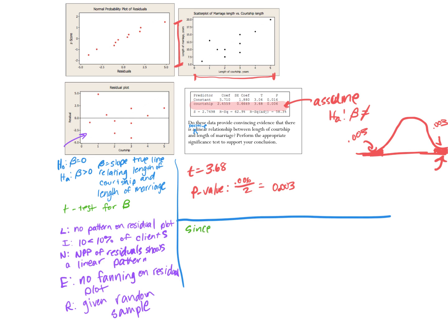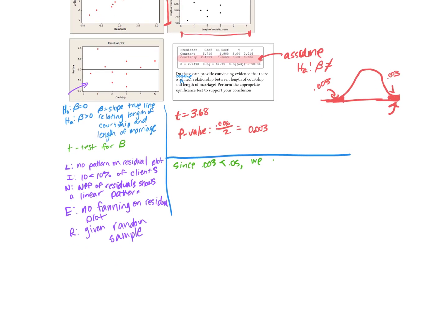And then we make our conclusion. Since 0.003 is less than 0.05, we can reject the null hypothesis. Therefore, we can conclude there is a positive relationship between length of courtship and length of marriage.